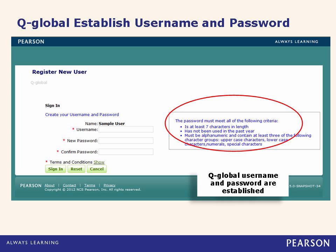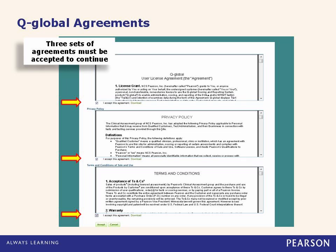When you are ready to initiate your account you will be prompted to read and review a series of agreements. You must accept these agreements before you actually begin setting up your account. Note you must check the box beneath three total agreements before you are able to click the accept button on the bottom of the screen.